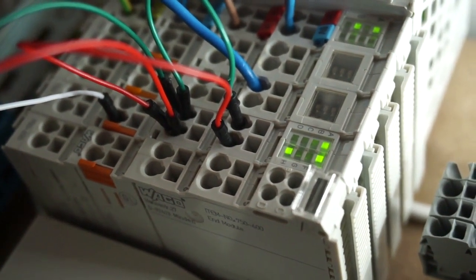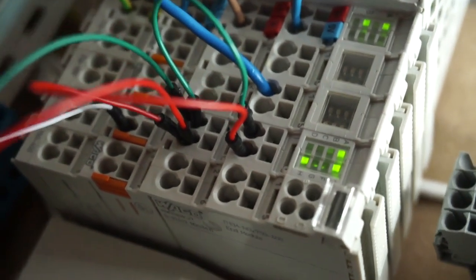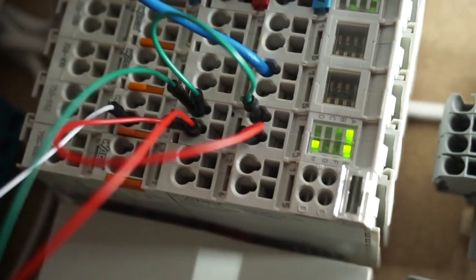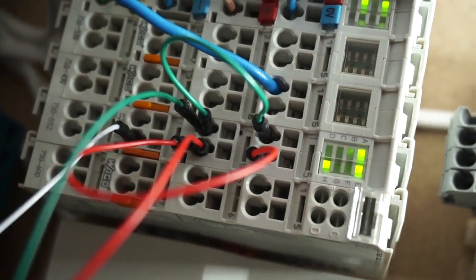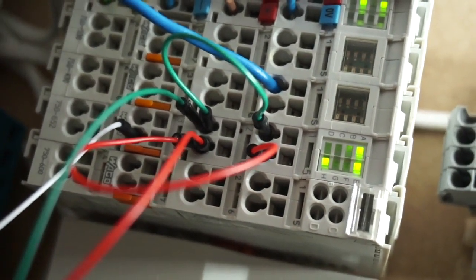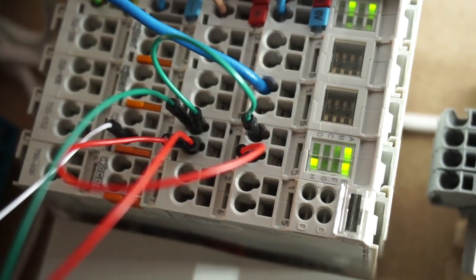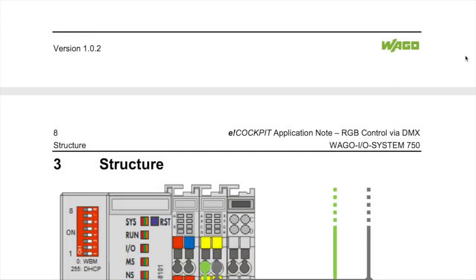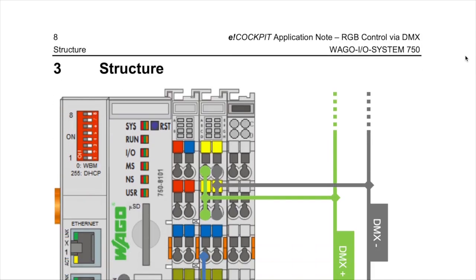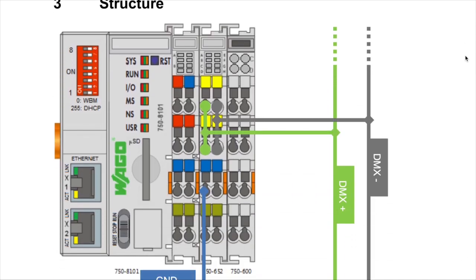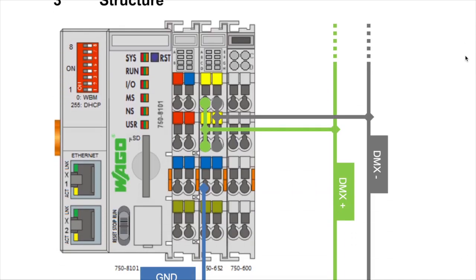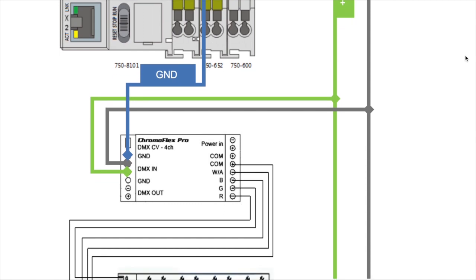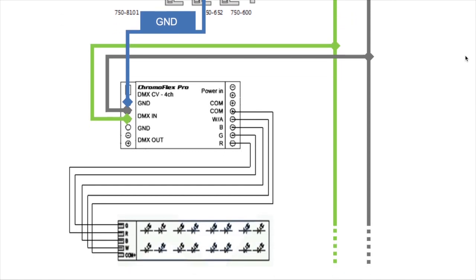This particular module is revision 6, but anything from revision 3 and upwards can function as DMX master within some limitations on the number of controllable channels. I'm using this wiring diagram from the WAGO application note on DMX to connect the serial module to the DMX 302 dimmer.